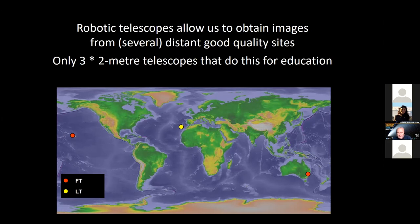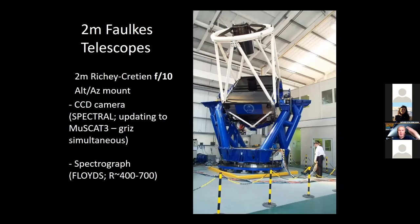There are three two-meter telescopes in the world that do a significant amount of education. Two are the Faulkes Telescopes — the dot on the left is in Hawaii, the dot on the right is in Australia — and the yellow dot is the Liverpool Telescope on La Palma in the Canary Islands. These are three of the telescopes we use and allow teachers and students to use, and we'll come on later to how you can access them.